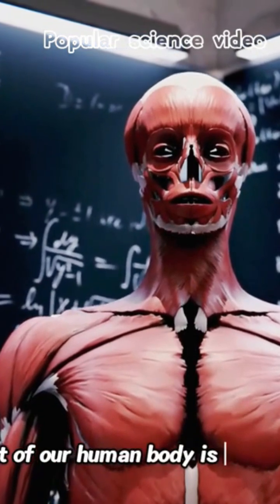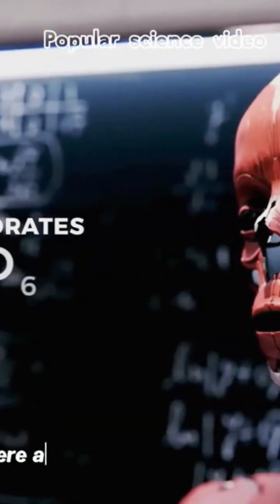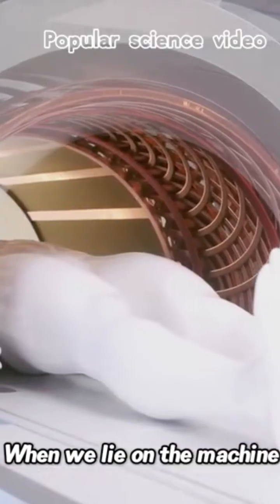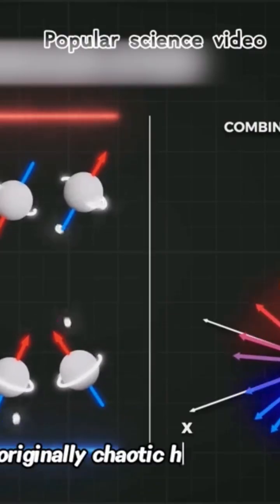In fact, most of our human body is made up of water, and there are hydrogen nuclei in the water. When we lie on a machine, the originally chaotic hydrogen nuclei...